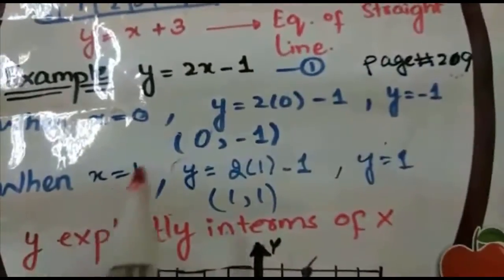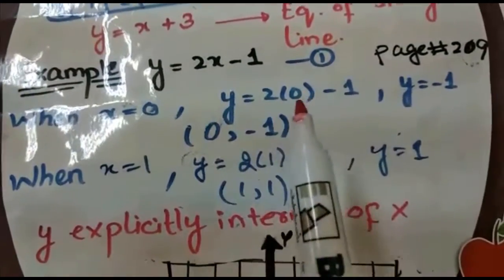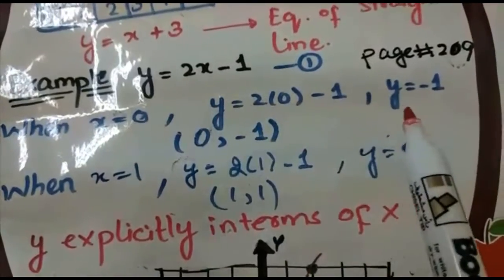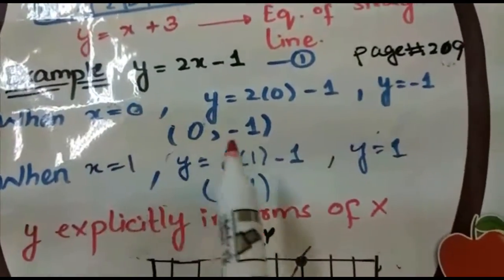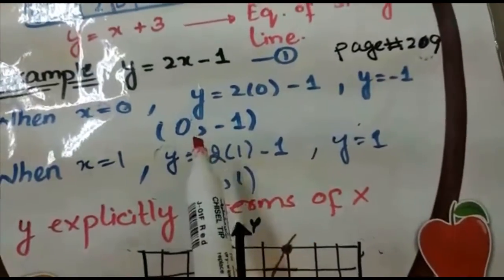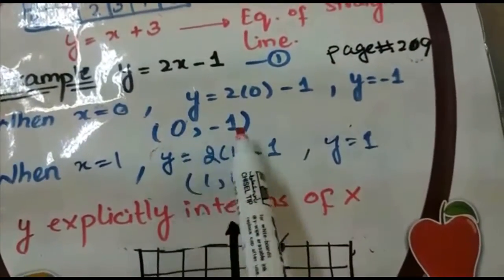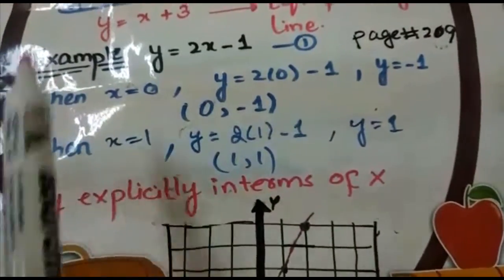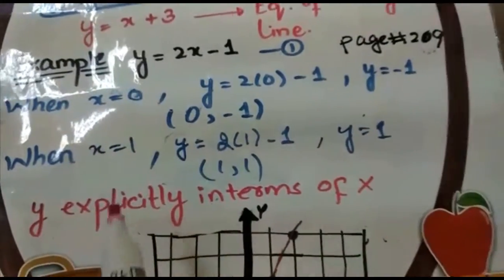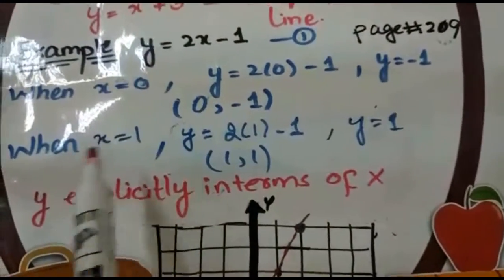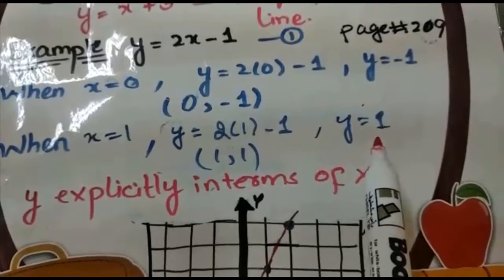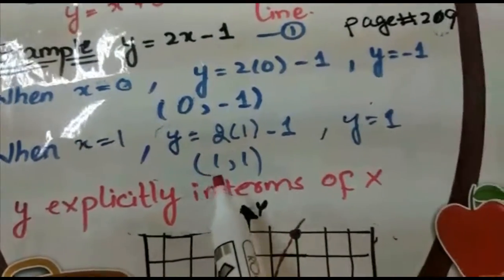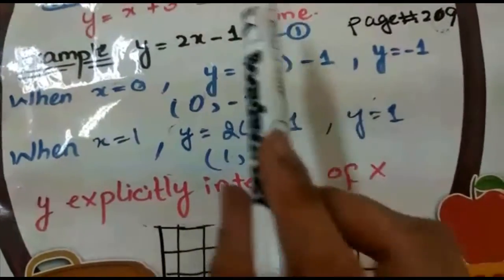Now we have to make the graph for this explicit function. When x = 0, substitute into the equation: y = 2(0) - 1, so y = -1. The ordered pair is (0, -1). Now take another value: when x = 1, substitute to get y = 1. So the ordered pair is (1, 1).